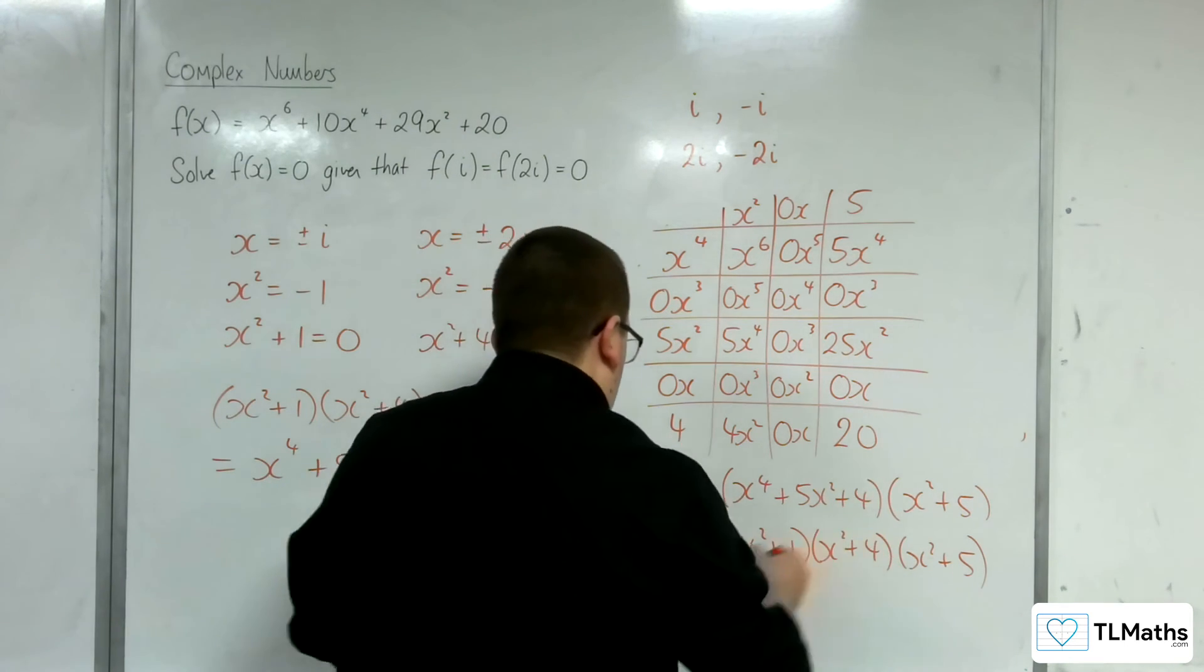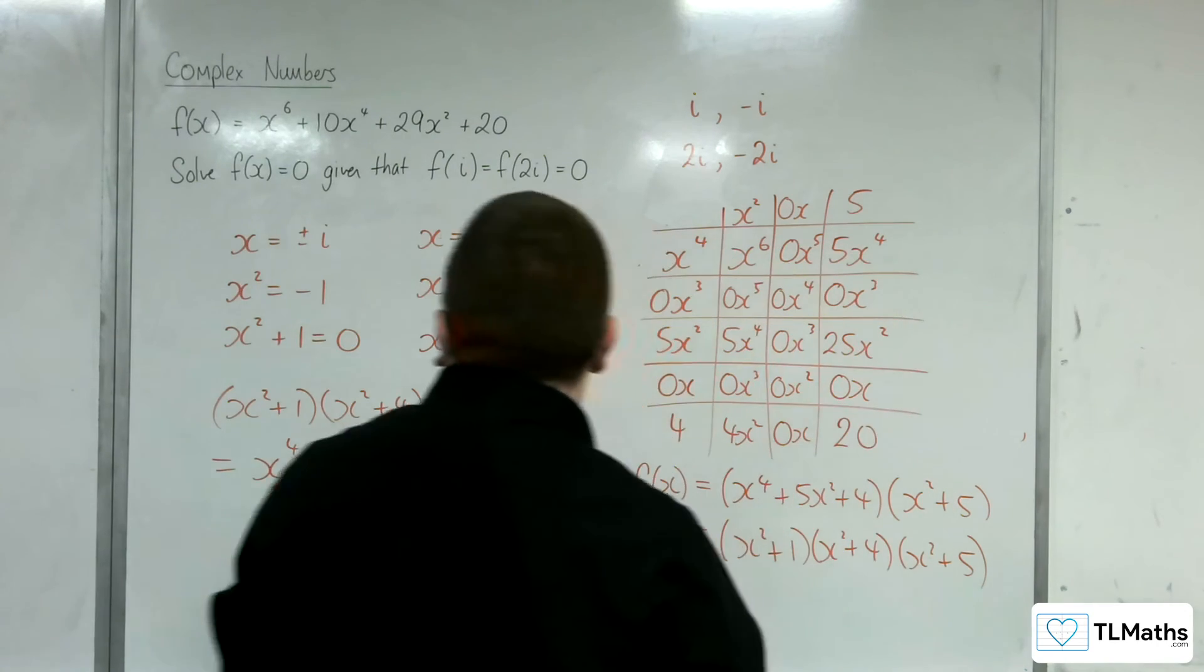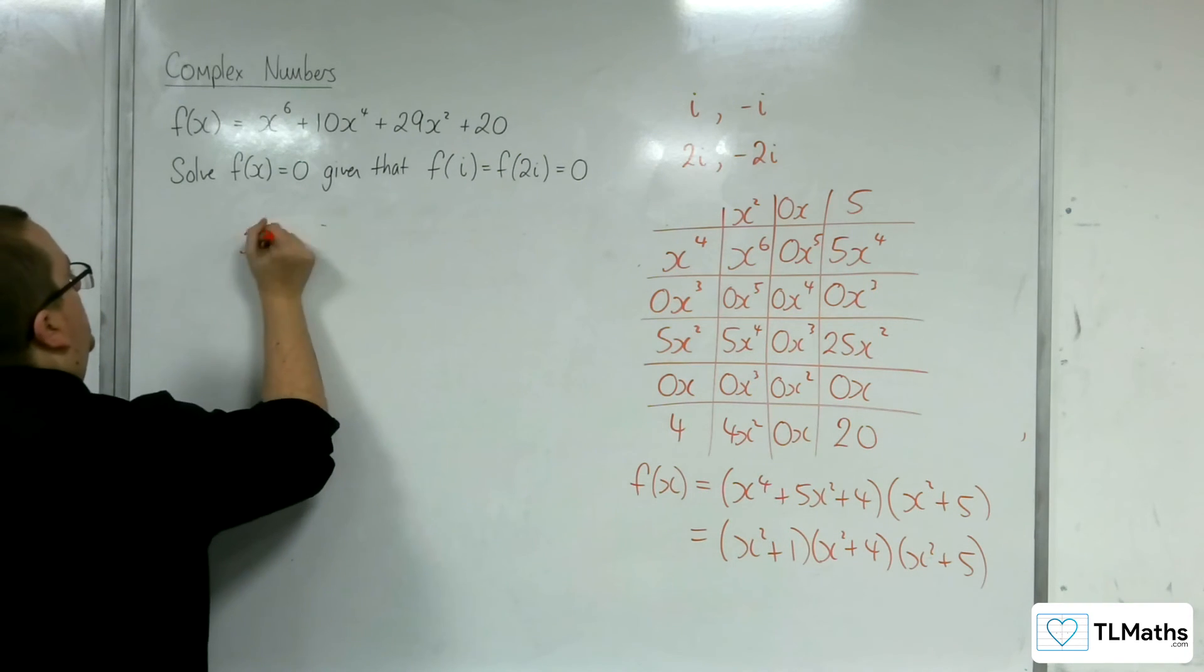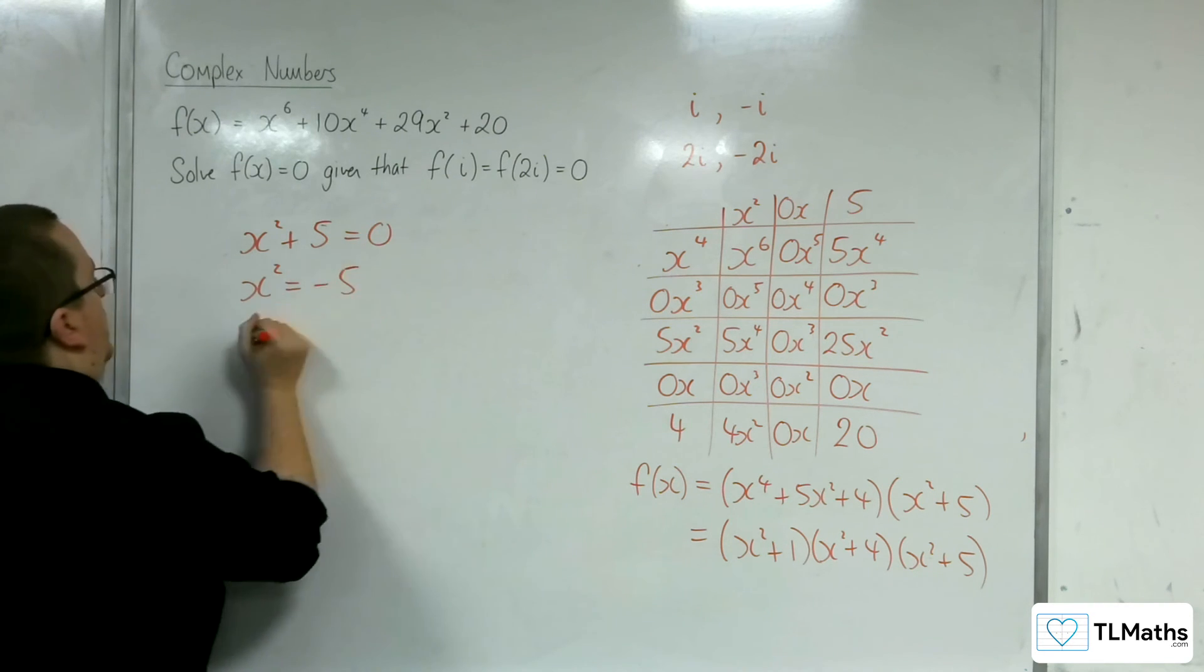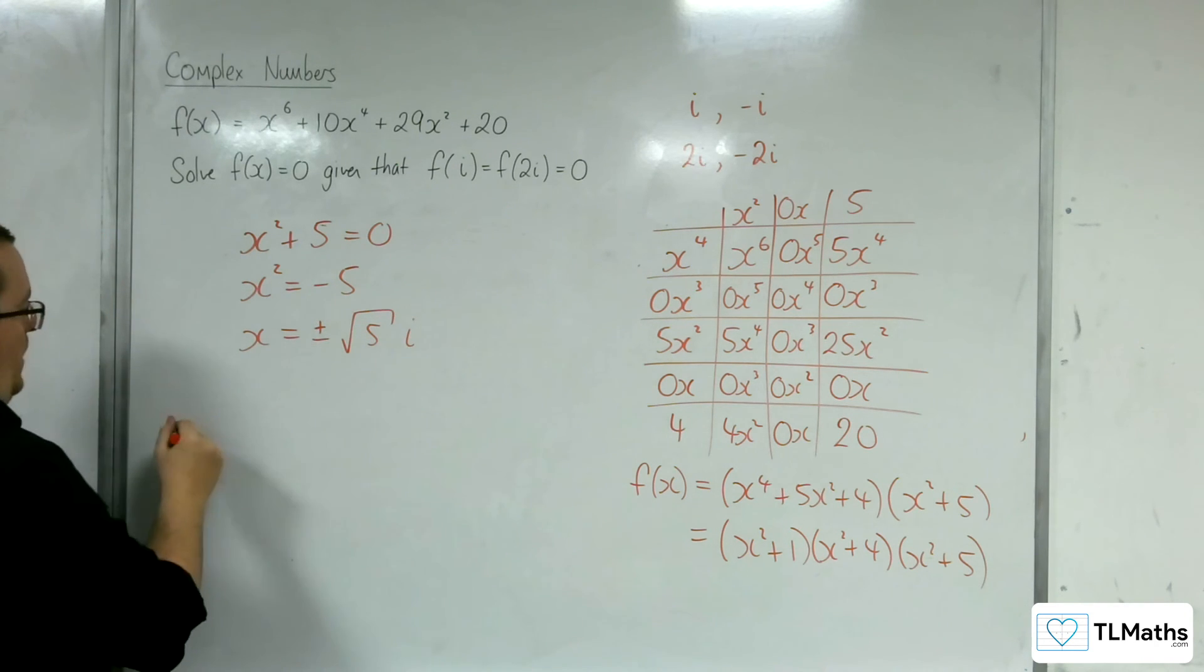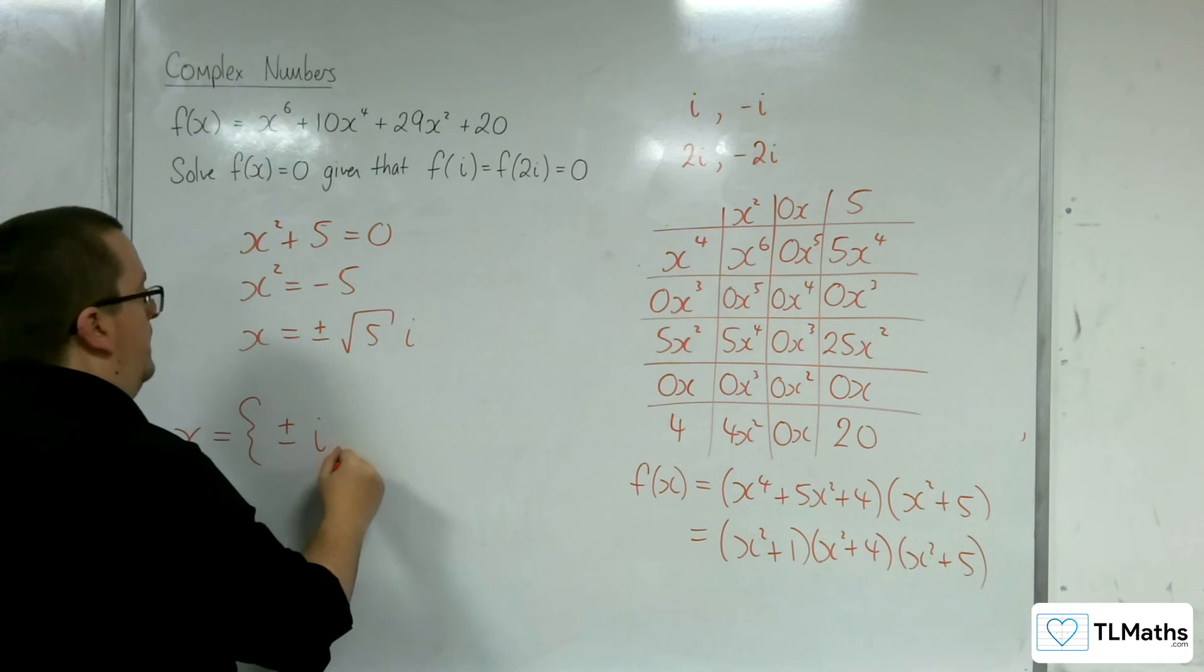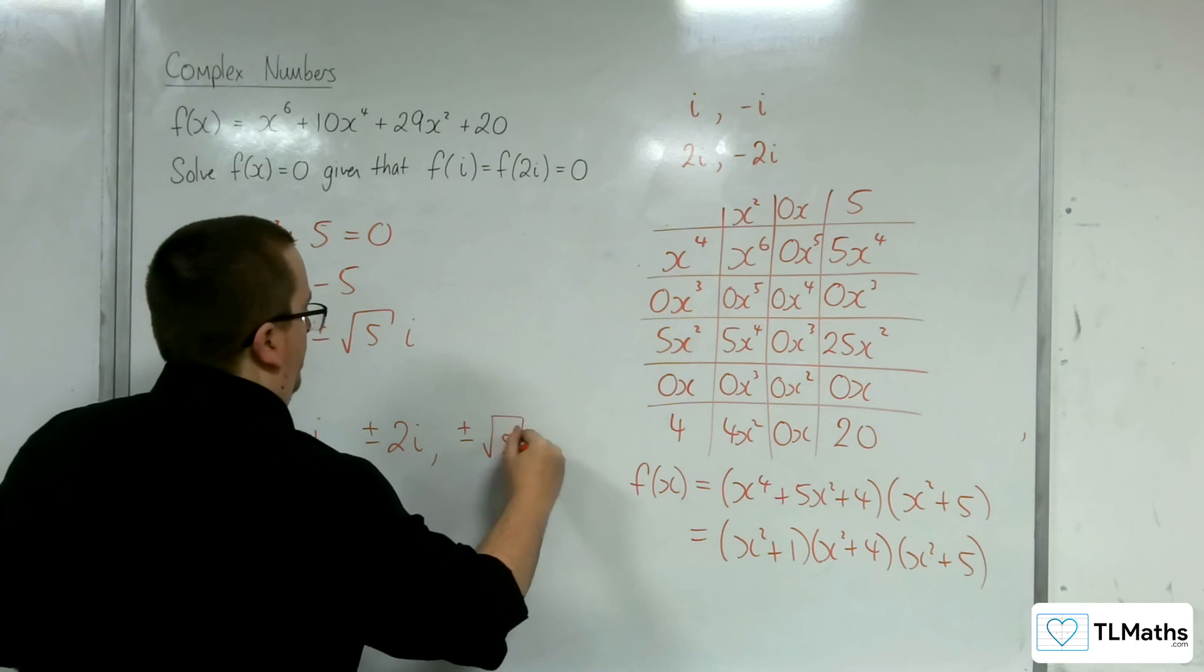So solutions to x squared plus 5 equals 0, so let's give myself a little bit of space. x squared is equal to negative 5, so x is equal to plus or minus the square root of 5i. So we have 6 solutions, x is equal to plus or minus i, plus or minus 2i, and plus or minus root 5i.